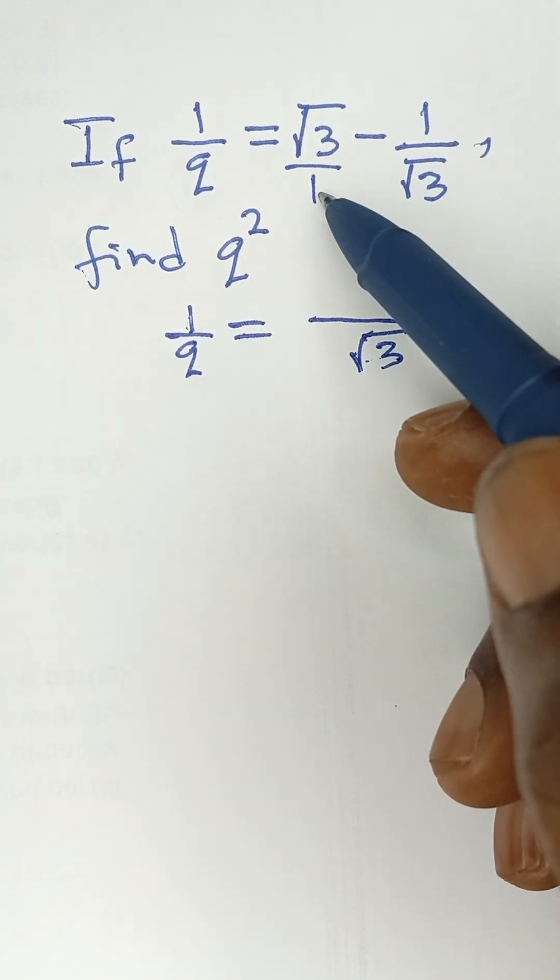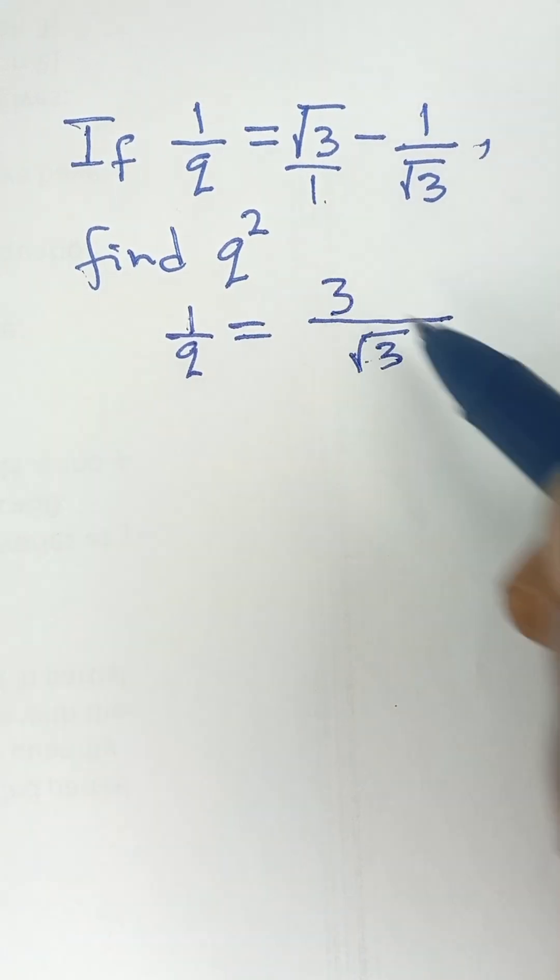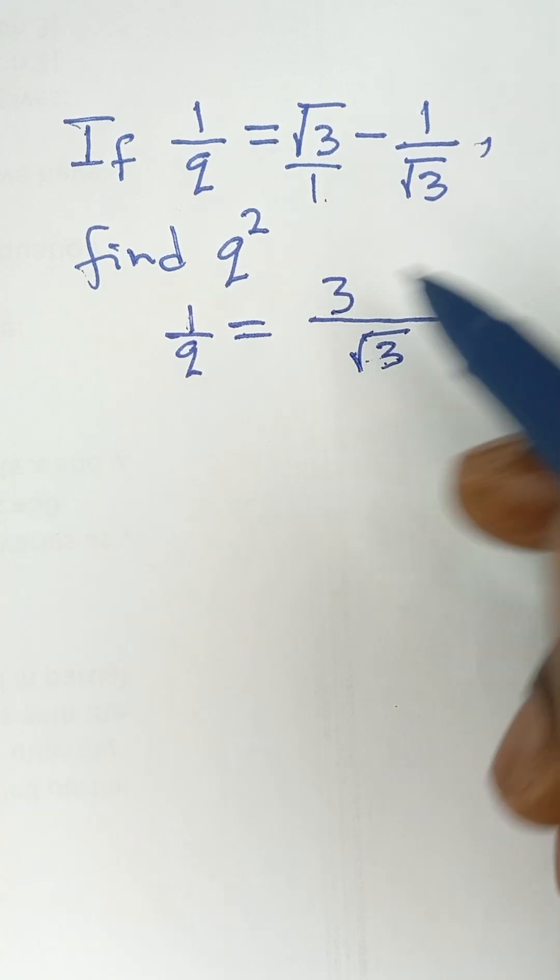Root 3 divided by 1 is root 3 multiplied by root 3, which is simply 3. Root 3 multiplied by root 3—just simply take what is inside the root sign and that gives you 3.